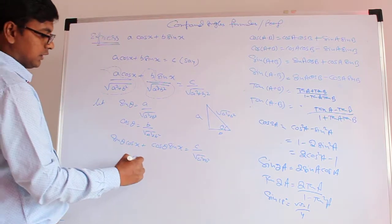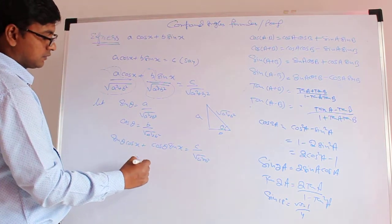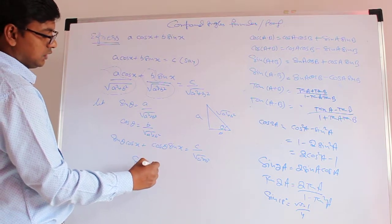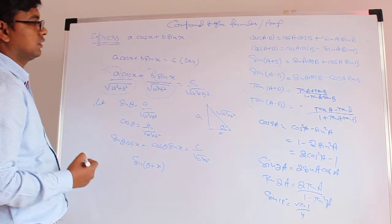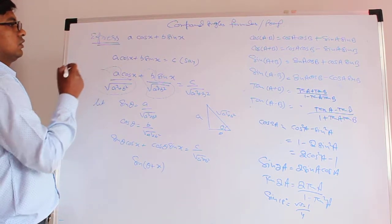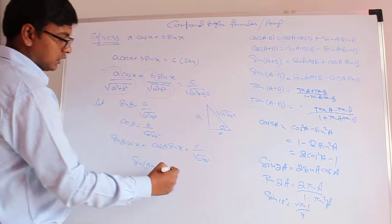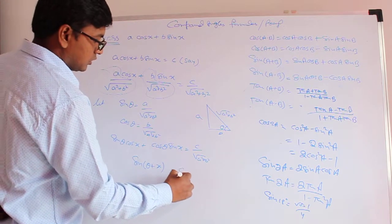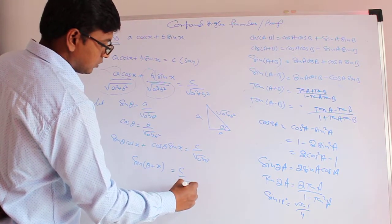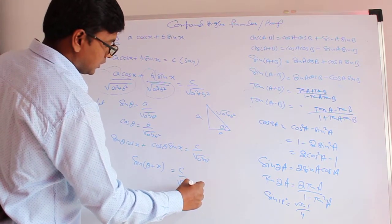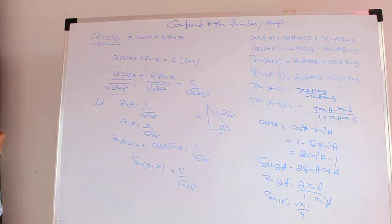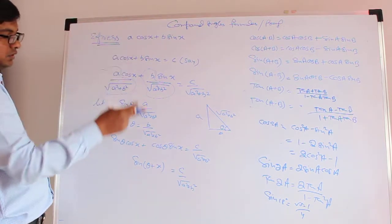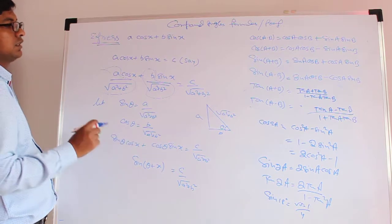This is the formula for sin(θ + x), equal to C / √(A² + B²). So we have converted the expression A cos x + B sin x into sine form.